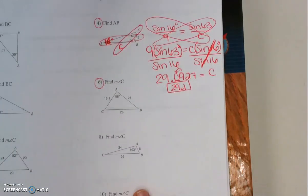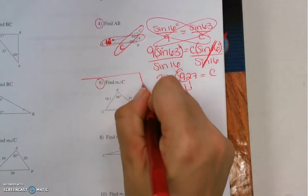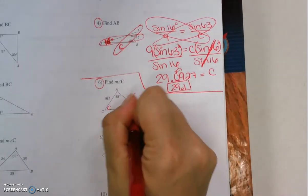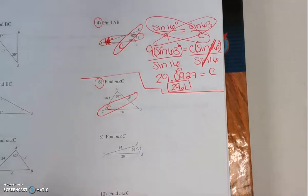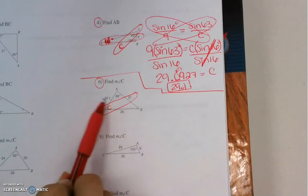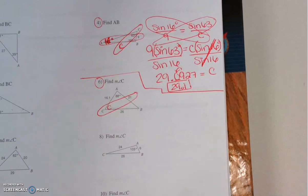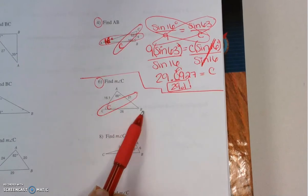Let's look at our next problem. Number 6. We're looking for angle C. Our C goes with side 21. If I look at B, I don't know angle B, so I don't have a perfect pair. I can only have one unknown out of the four pieces of information. So this is not going to work.